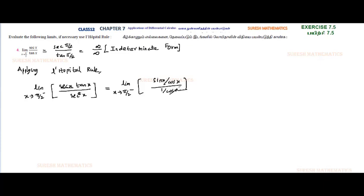So we have cos x in both numerator and denominator, which cancel. The remaining is limit x tends to pi by 2 minus sin x.